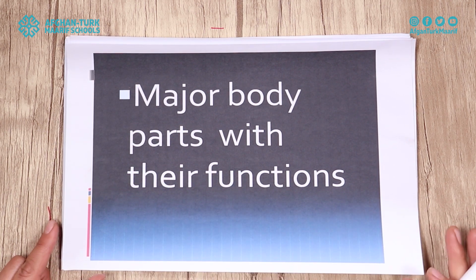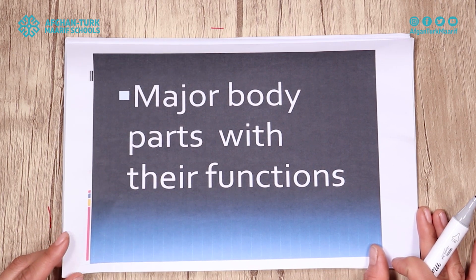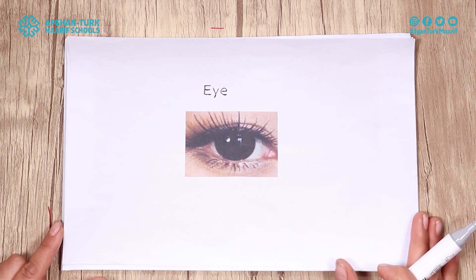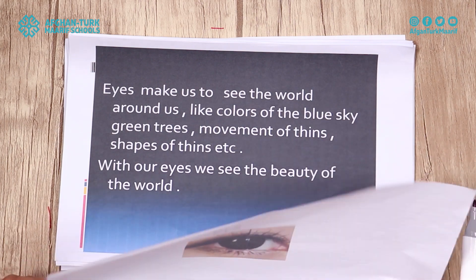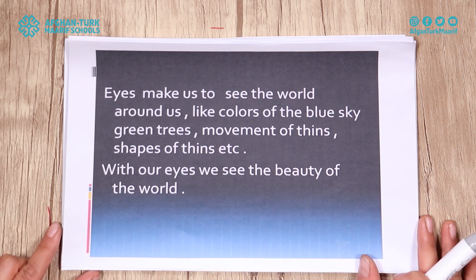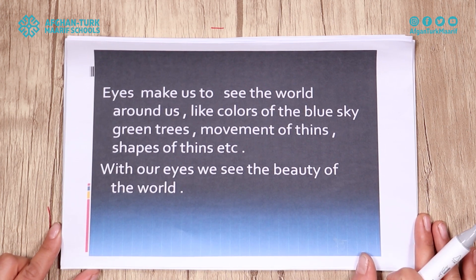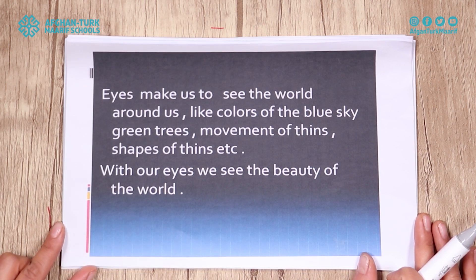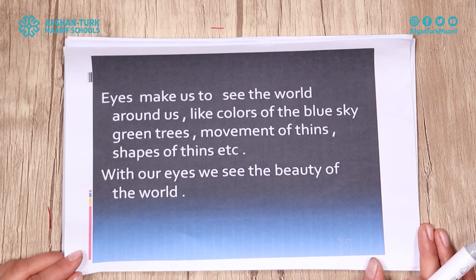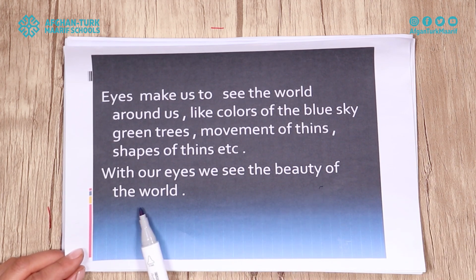Major body parts with their functions. Eyes — eyes are made to see the world around us, like the colors of the blue sky and green trees, the movement of things, and the shapes of things. With our eyes we see the beauty of the world.